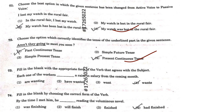Next, question 73: Fill in the blank with the appropriate form of the verb that agrees with the subject. 'Each one of workers dash a raise in salary from the coming month.' We have to fill in with the correct verb. This starts with 'each' — if you have studied subject-verb agreement, whenever you have 'each one of,' 'every one,' or 'every,' it will always take a singular verb. So the correct answer is the fourth option: 'wants.' Each one of the workers wants a raise in salary from the coming month.